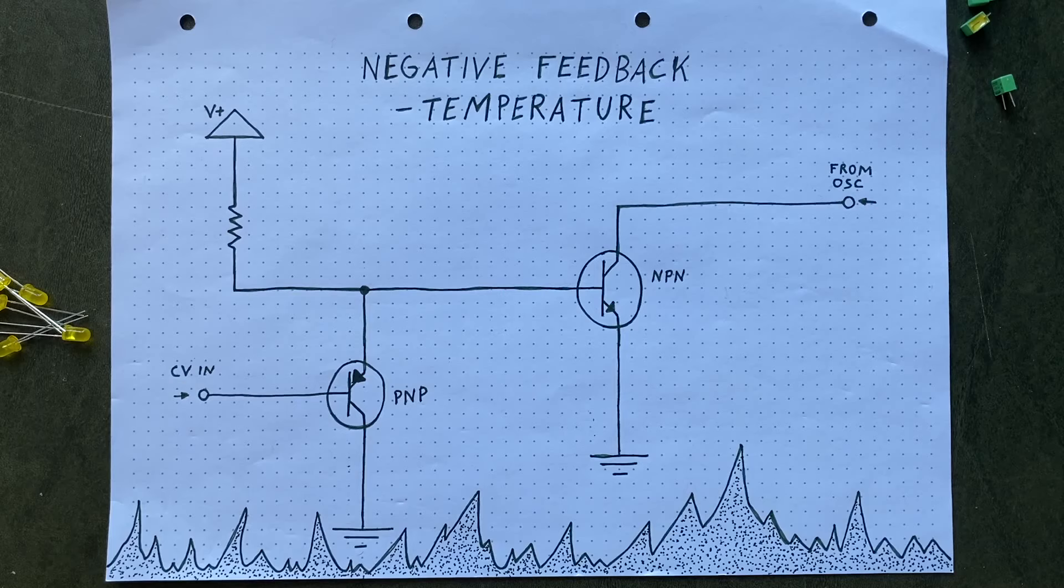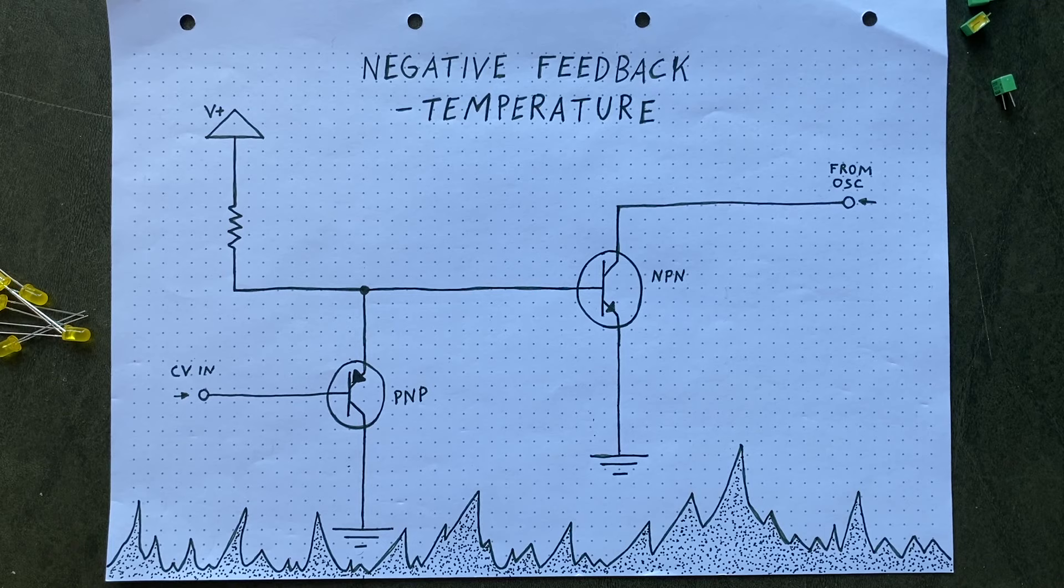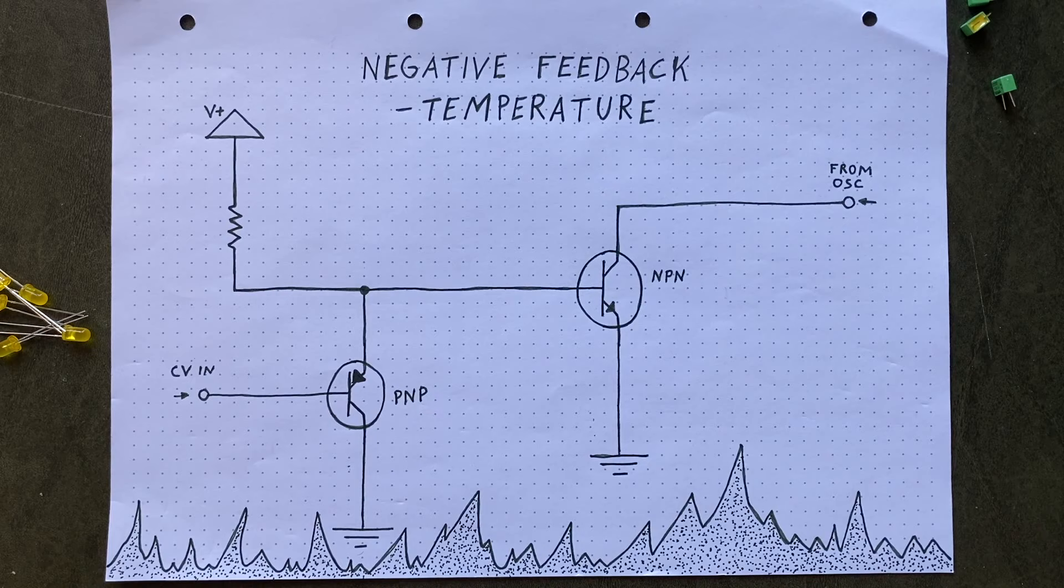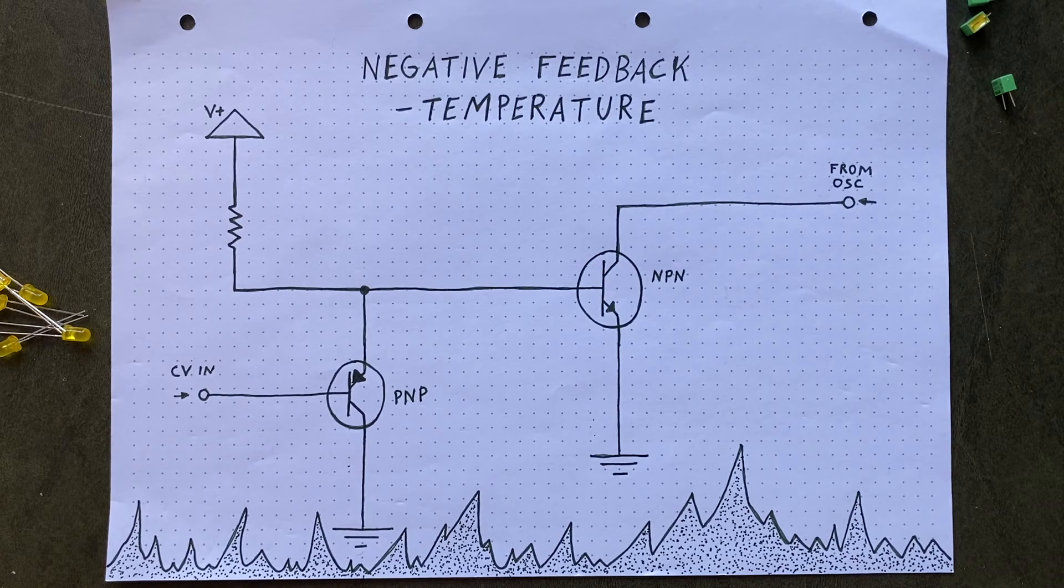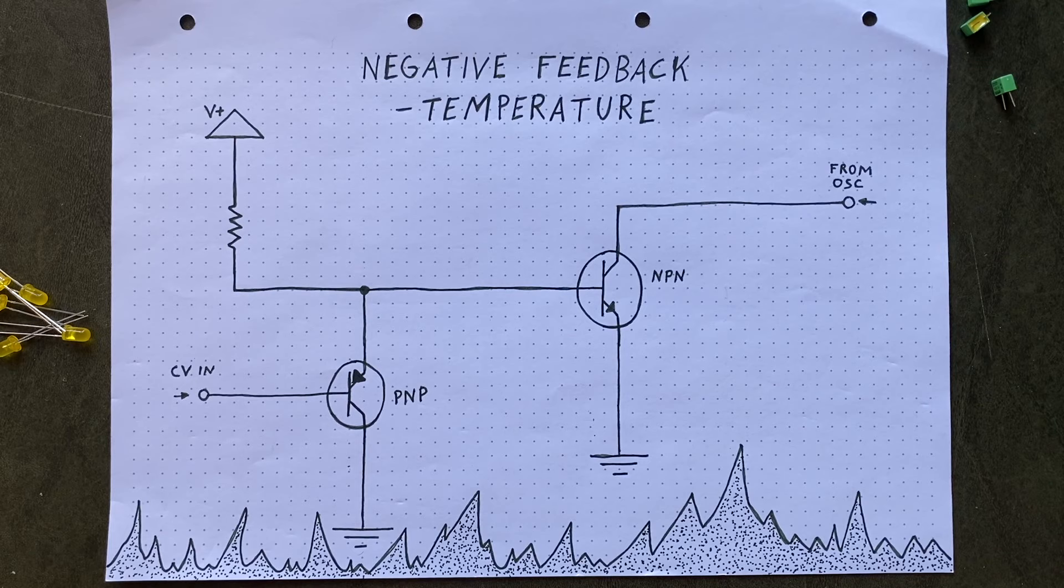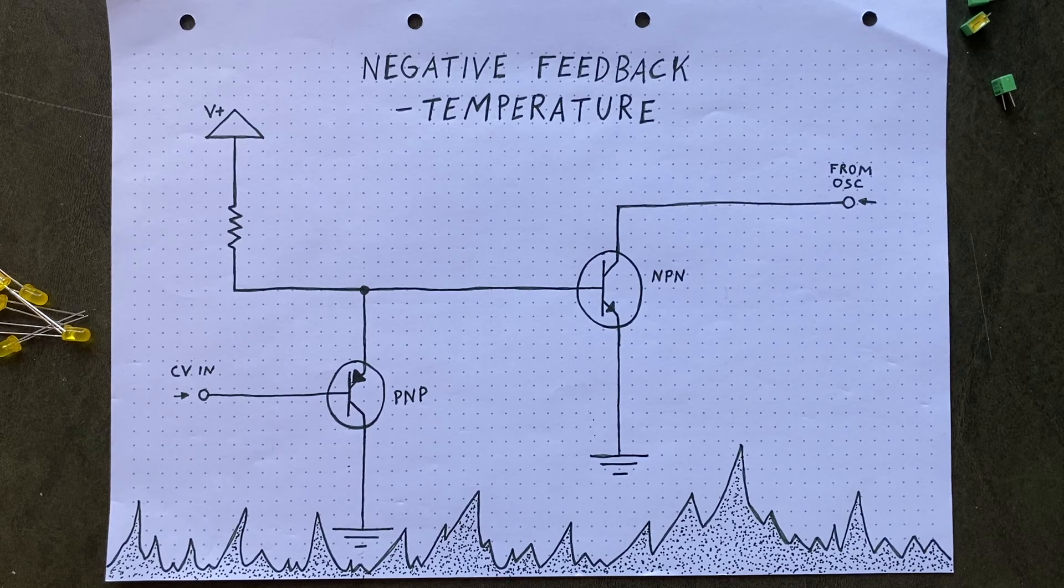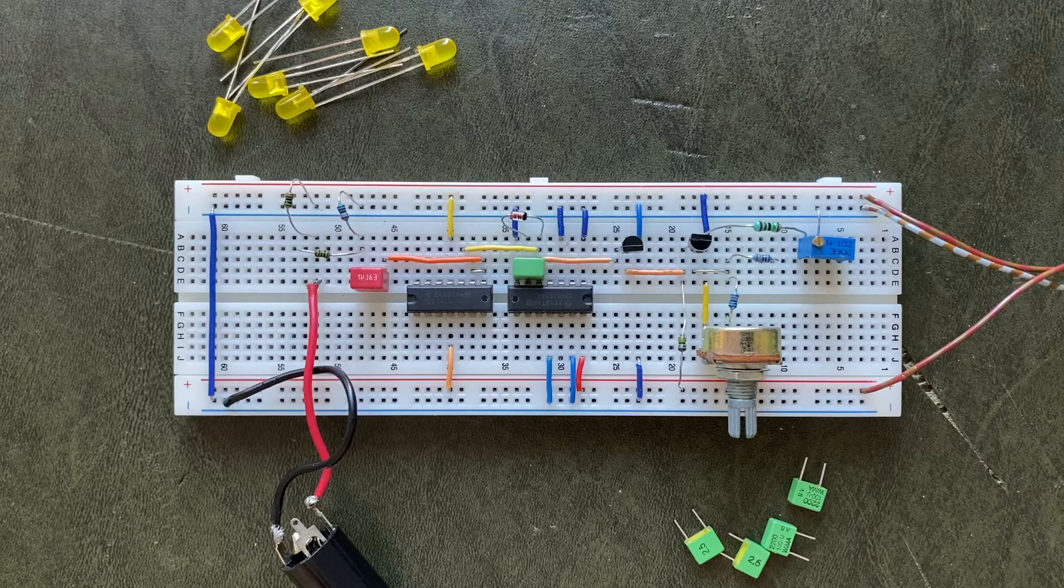When I claimed that the NPN and the PNP transistors react the same way to a given rise in ambient temperature, that was, as with most things I explain here, a broad generalization. Reality is much more complex. If you really want to dive into it, check out the Ebers-Moll equation. I put a link to it in the description. But since I'd like to keep it simple here, and frankly can't really wrap my head around that equation, let's do a really primitive experiment.